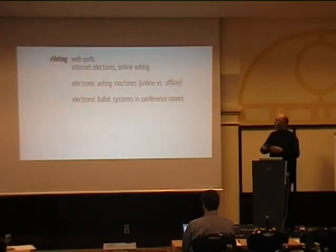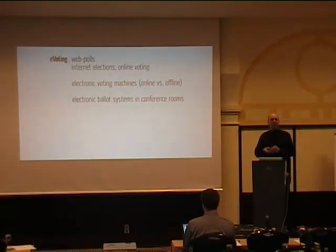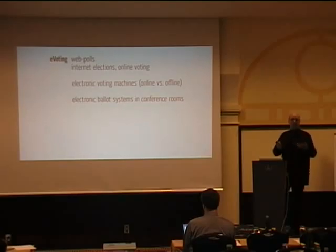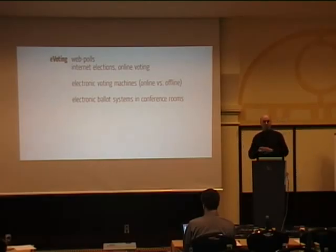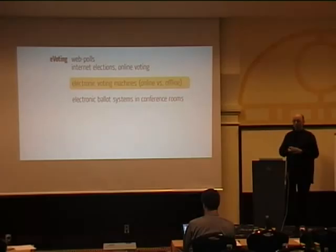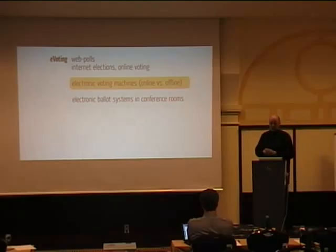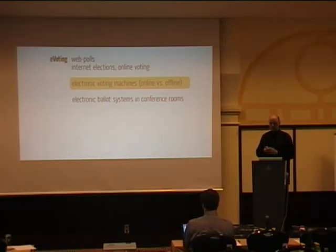I'm going to talk about e-voting. There are a number of things associated with e-voting: web polls, internet elections, online voting. The people in Estonia do that — they're really brave — especially in light of the recent denial of service attacks that happened there. There are online and offline electronic voting machines, and electronic ballot systems in rooms like this or in parliament. I'm only going to talk about electronic voting machines, because this is the aspect mostly in discussion at the moment. There is also a political discussion in Austria about whether we should get electronic voting machines; they even discuss internet elections.